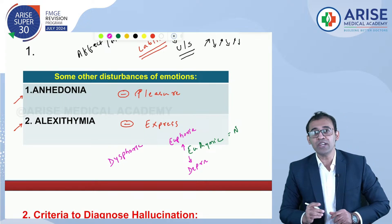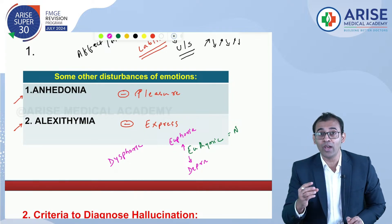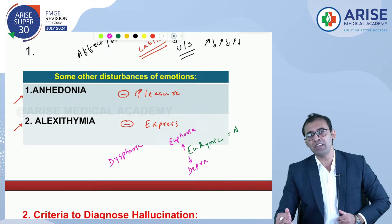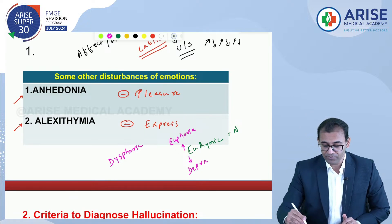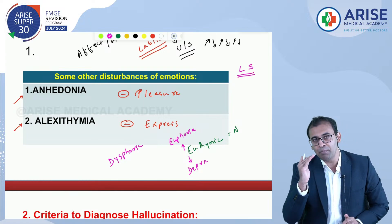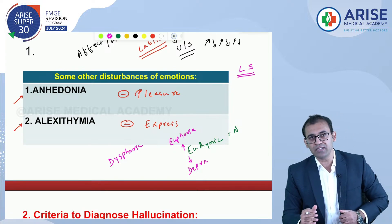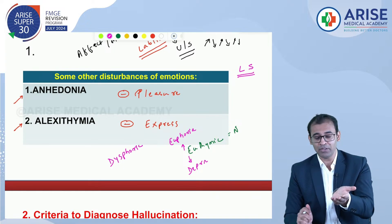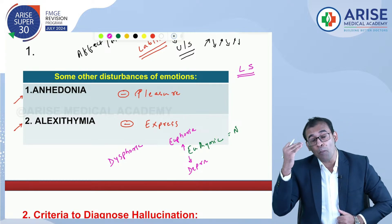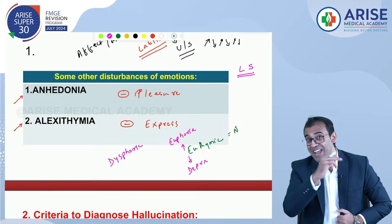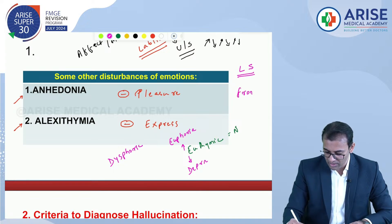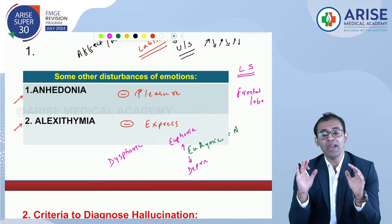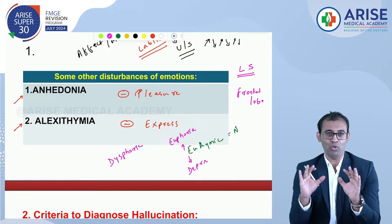The limbic system is responsible for generating emotion. Its components can be remembered using the mnemonic MATCH: Mammillary body, Amygdala, Thalamus, Cingulate gyrus, Hippocampus, Hypothalamus. The limbic system is the factory of emotion, while the frontal lobe regulates emotion.